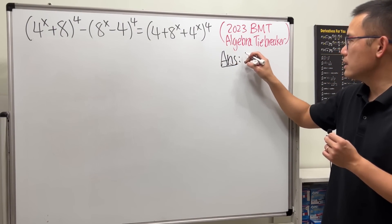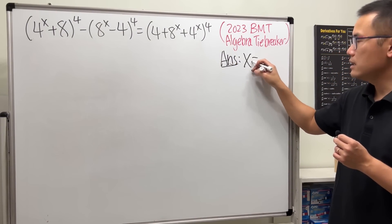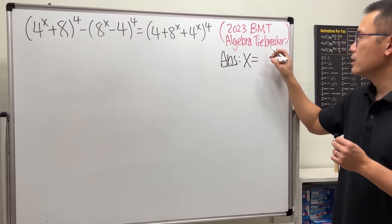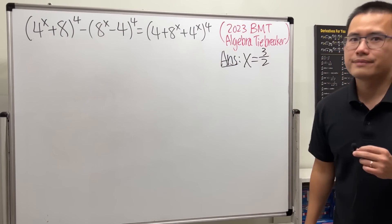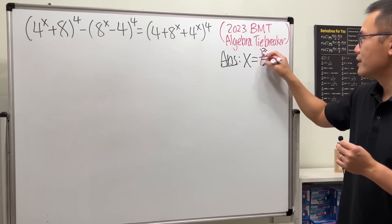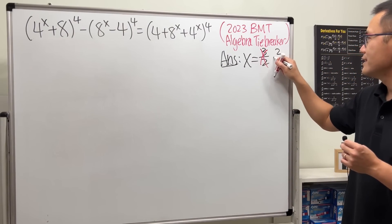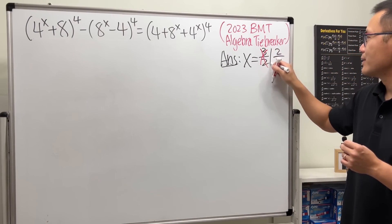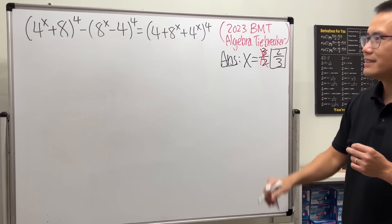The answer to this is x equals two-thirds. Yeah, two-thirds is the answer.